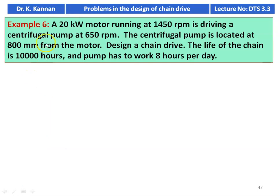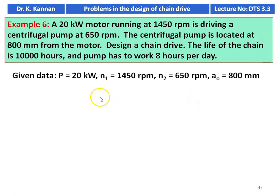Next question, example 6: a 20 kilowatt motor running at 1450 RPM is driving a centrifugal pump at 650 RPM. The centrifugal pump is located 800 millimeter from the motor. Design a chain drive — the life of the chain is 10,000 hours and the pump works 8 hours per day. Given data: power = 20 kW, pinion speed = 1450 RPM, pump speed = 650 RPM, center distance = 800 mm.